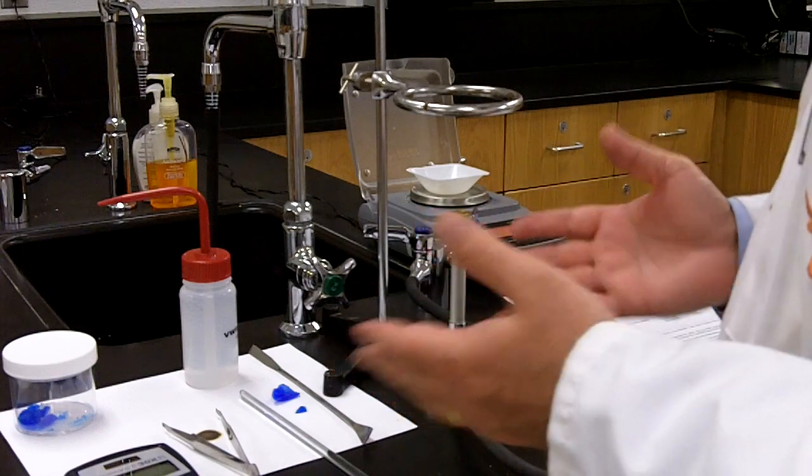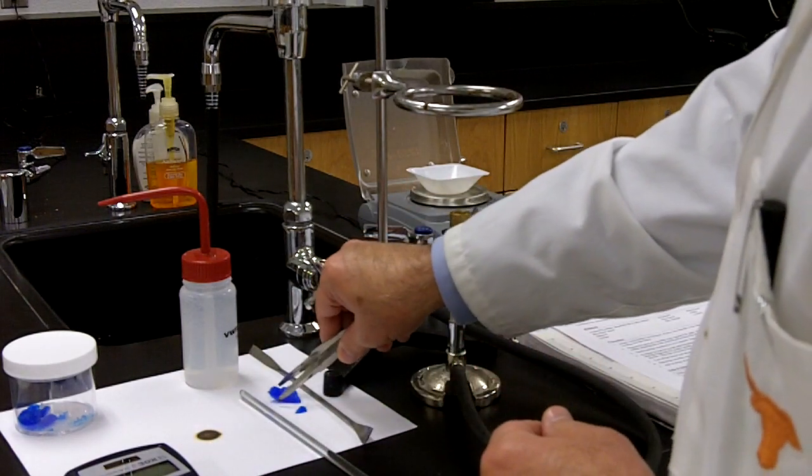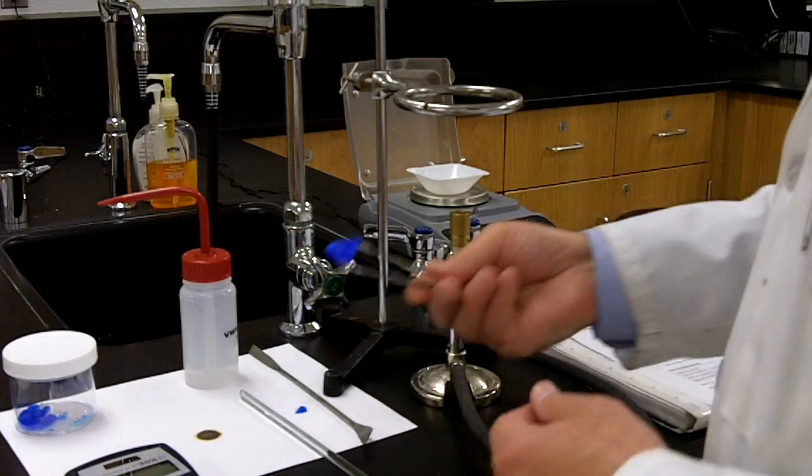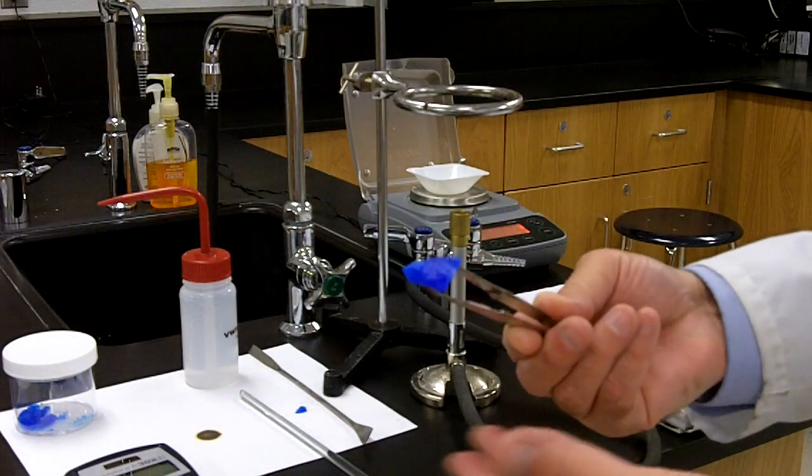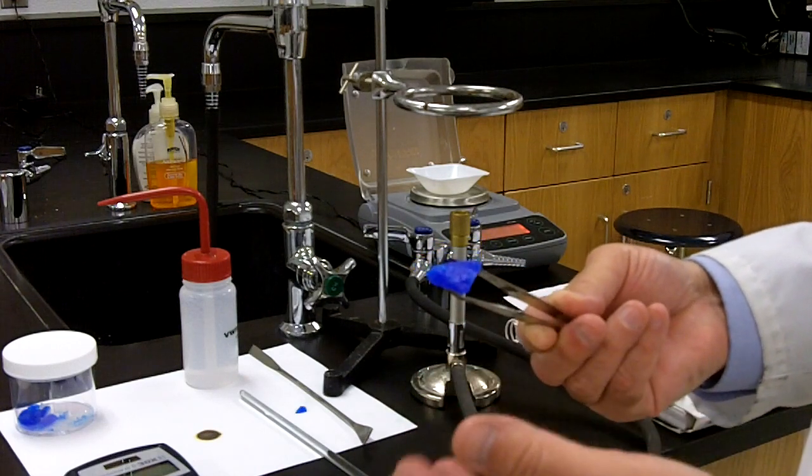So I guess a good place to start would be to ask the question, what is a hydrate? Well, a hydrate in this case, the one we're going to be using today, is called copper 2 sulfate pentahydrate. This is a beautiful blue crystal, and as you can see, it's a very deep blue color, and it contains water.